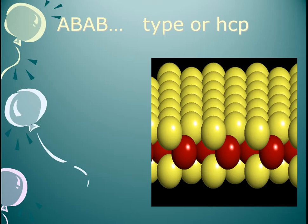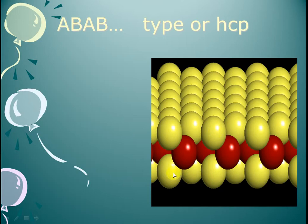Here is a hexagonal closed packing structure. You can see it in the diagram. It starts in the middle layer, then the upper layer. So we will see layer A, then layer B, then it returns to layer A in the upper layer. This way it proceeds — ABAB.